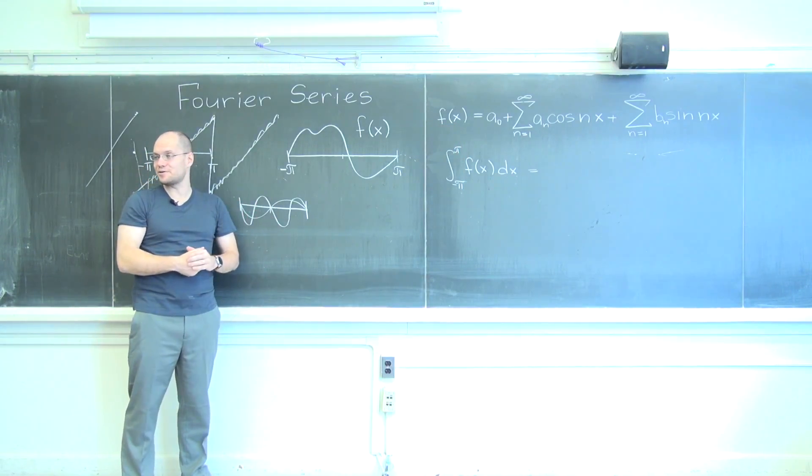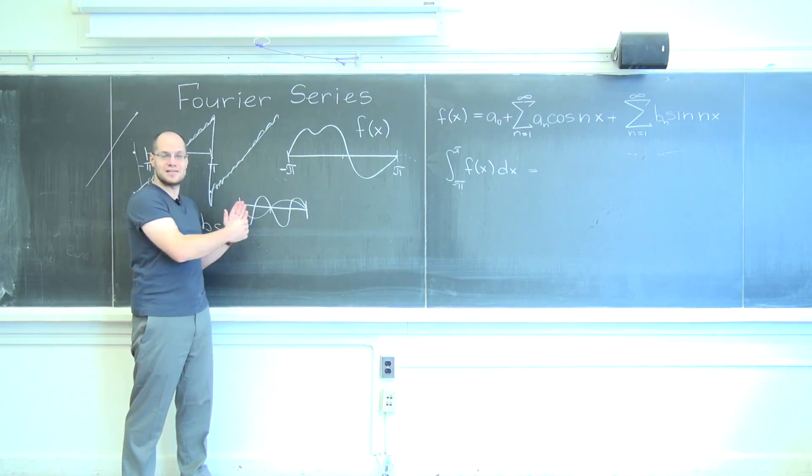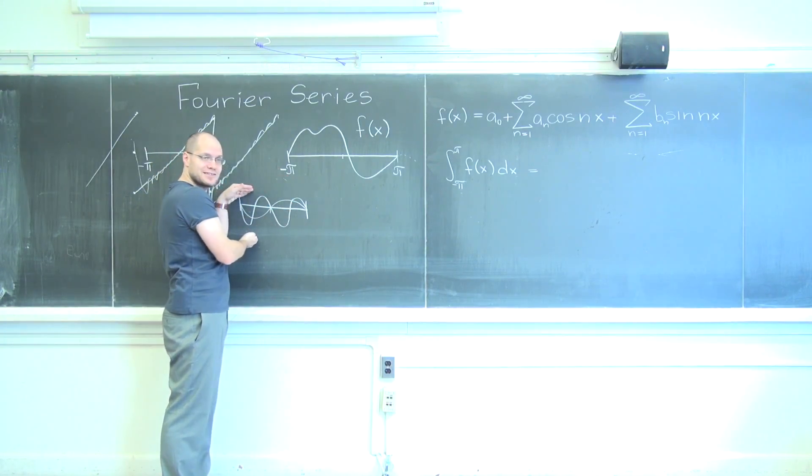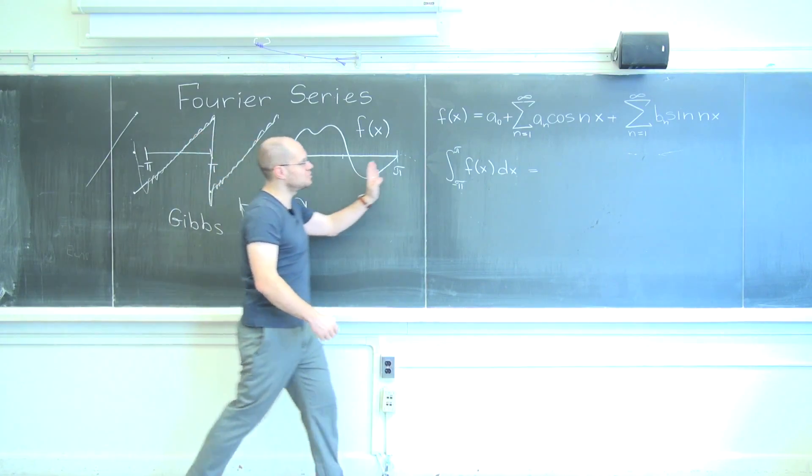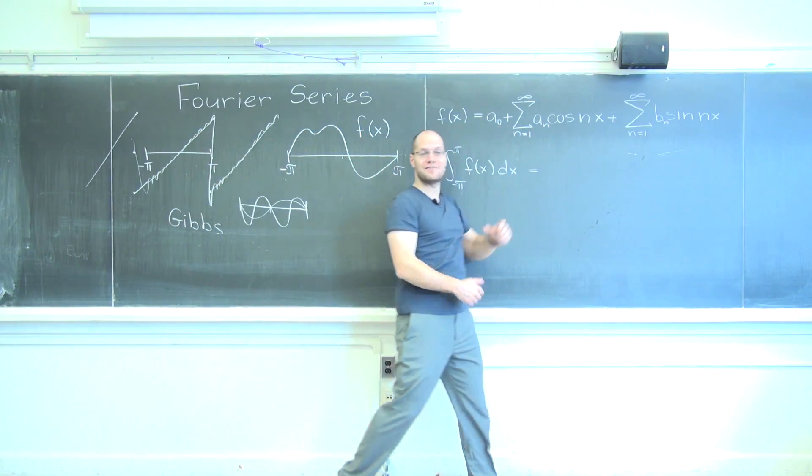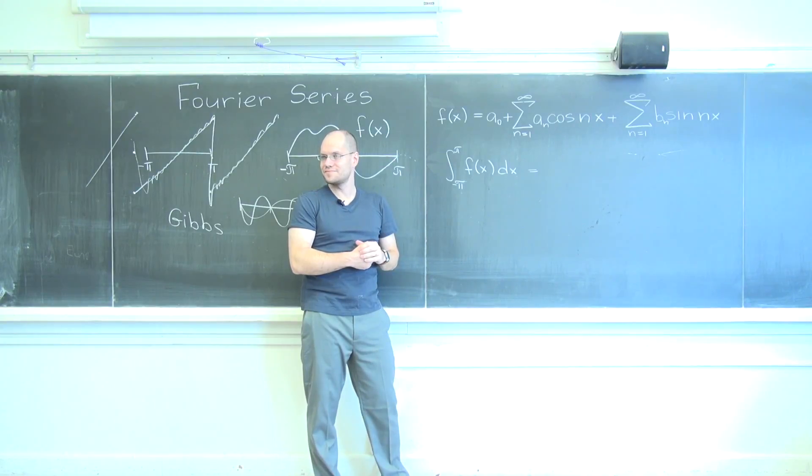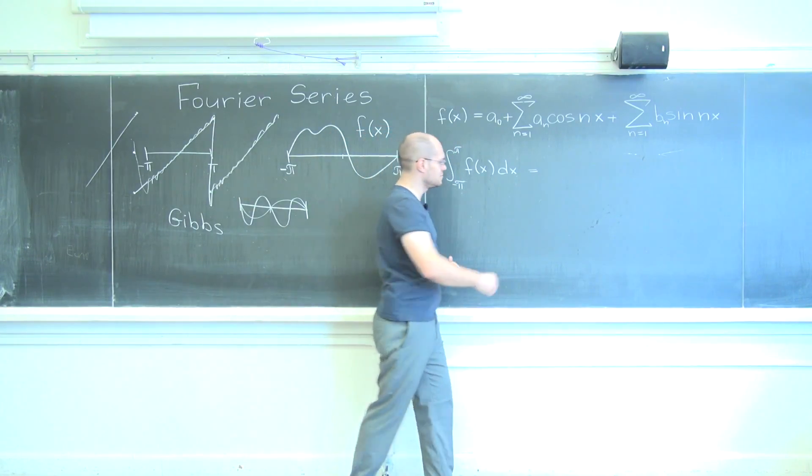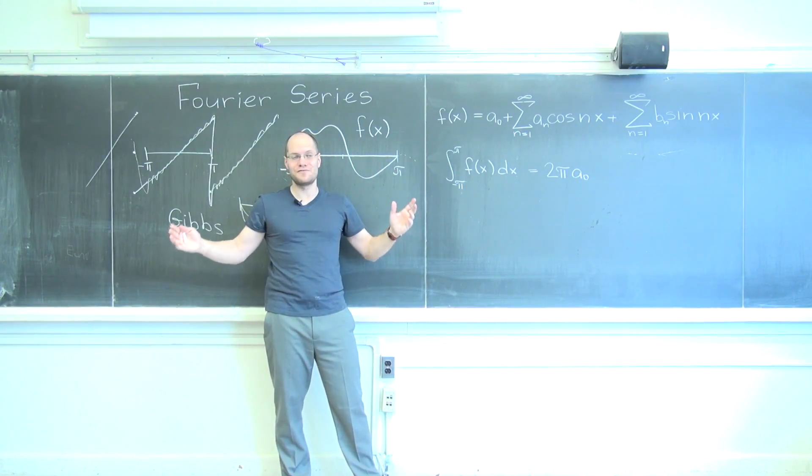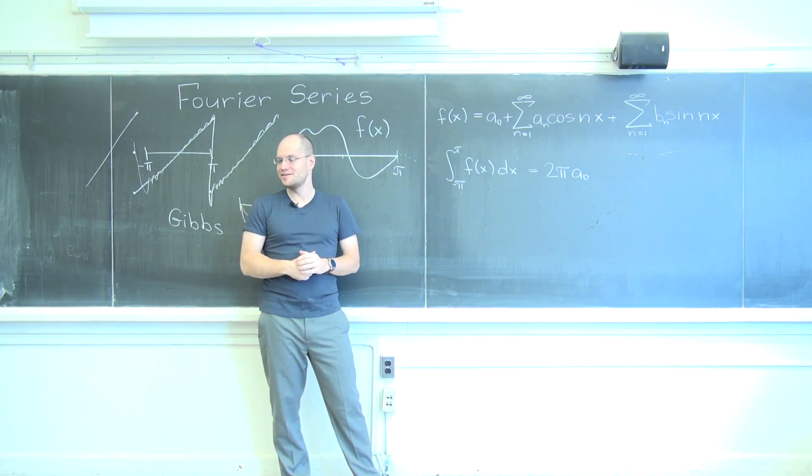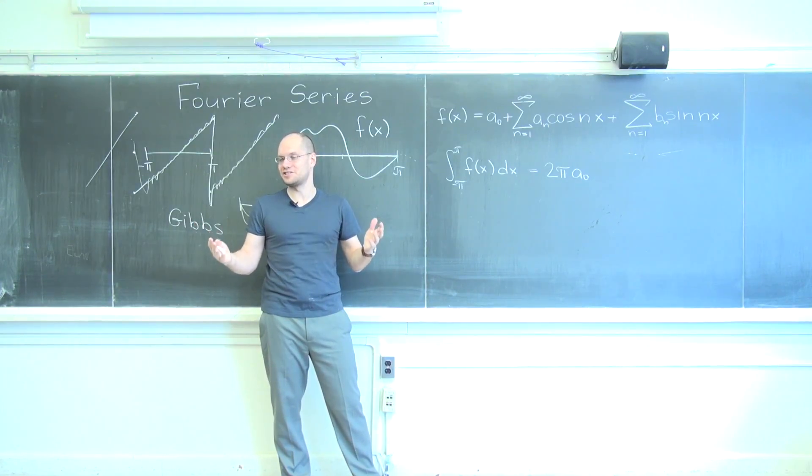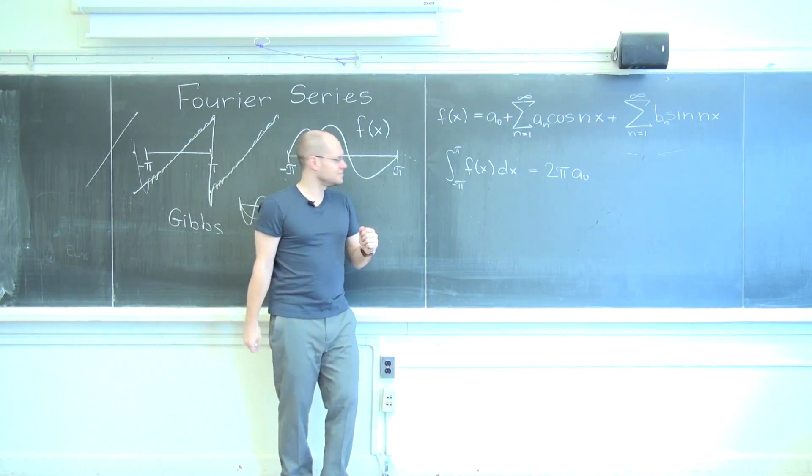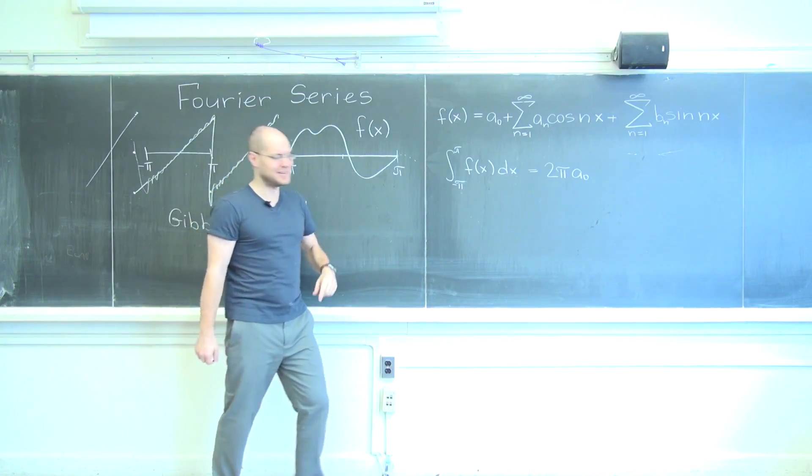Obviously, when you integrate this, it all cancels out. Same thing with cosines because it's perfectly periodic and perfectly centered. All of these integrals would be zero. The only one that will survive is a zero. And so the answer will be two pi a zero. And so we have our formula for a zero. It's essentially the integral of the function divided by two pi.